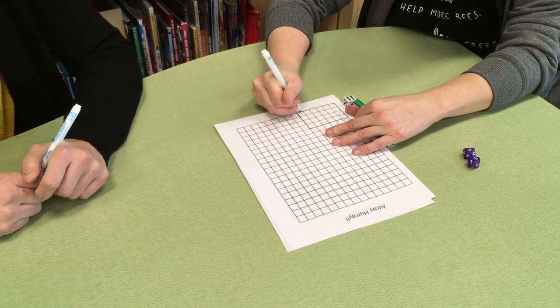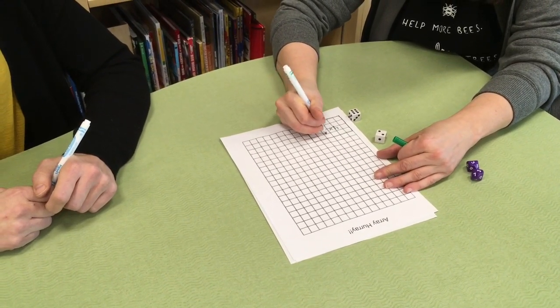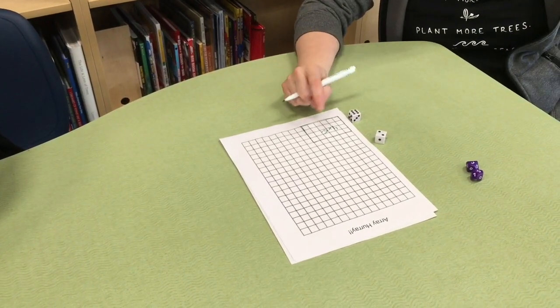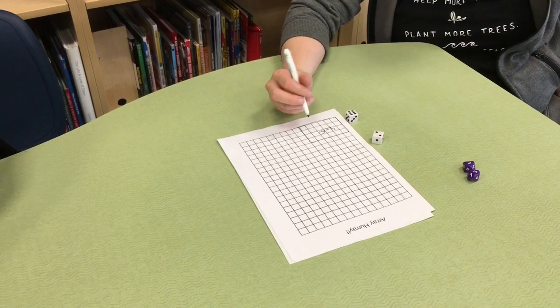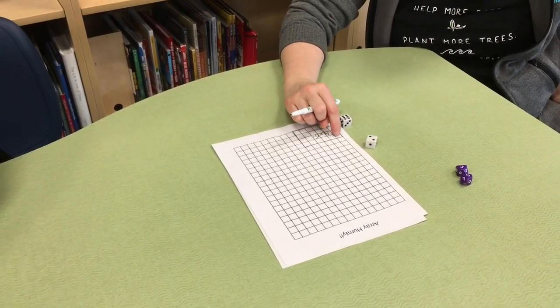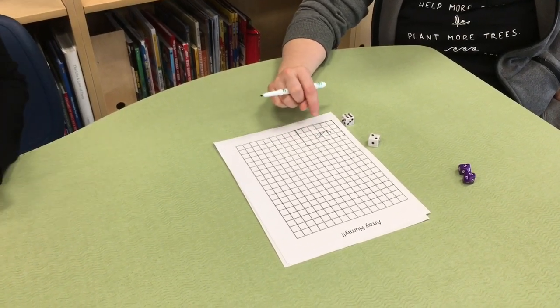And I'm going to write in the middle four times six equals. Now, if I already know my multiplication facts, I can just write it there. If I'm still learning them, that's okay. This is a great way to learn some of your facts. You can just count and whatever the area inside is, the boxes, it will be the answer.